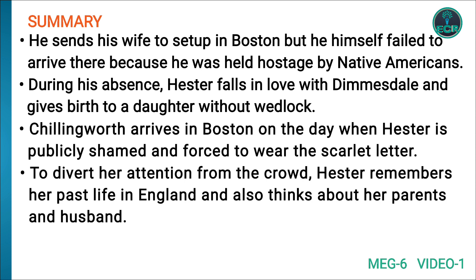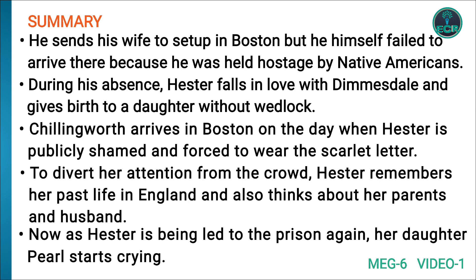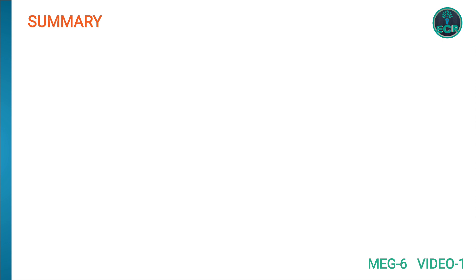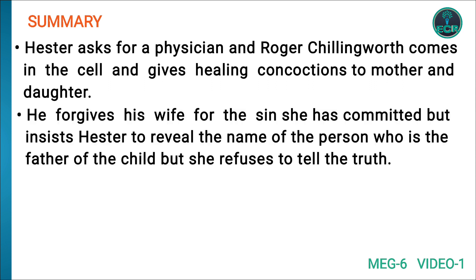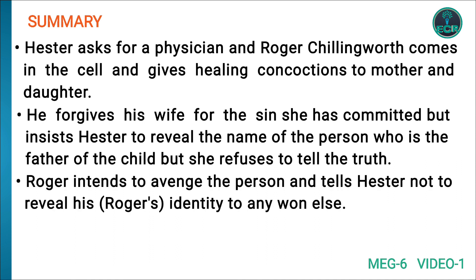To divert her attention from the crowd, Hester remembers her past life in England and thinks about her parents and husband. As Hester is being led back to prison, her daughter Pearl starts crying. Hester asks for a physician, and Roger Chillingworth comes to the cell and gives healing concoctions to mother and daughter. He forgives his wife for her sins but insists that Hester reveal the name of the father of the child. She refuses to tell the truth. Roger intends to find the person and tells Hester not to reveal his identity to anyone.